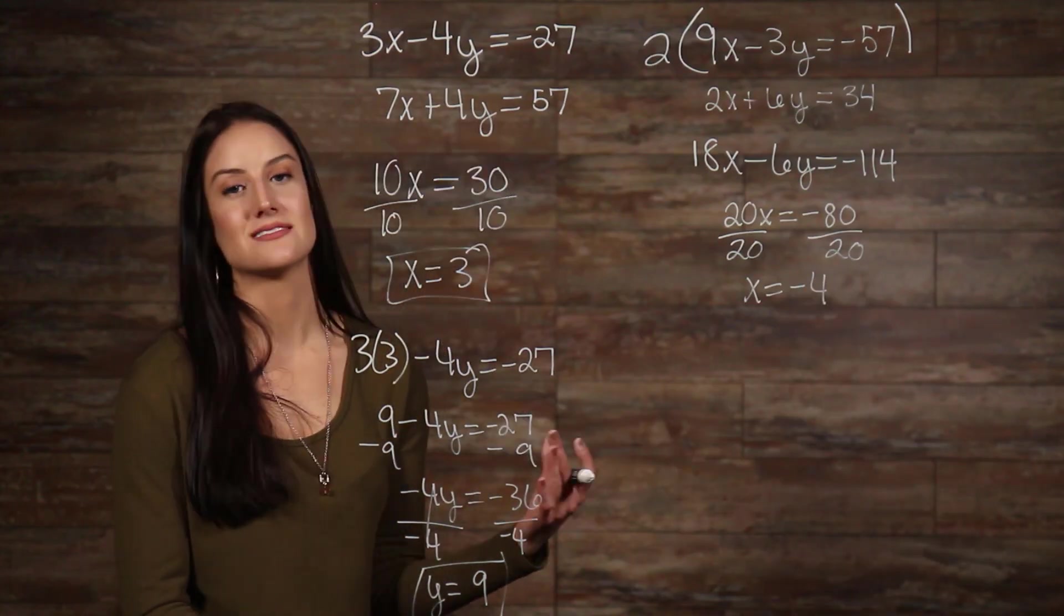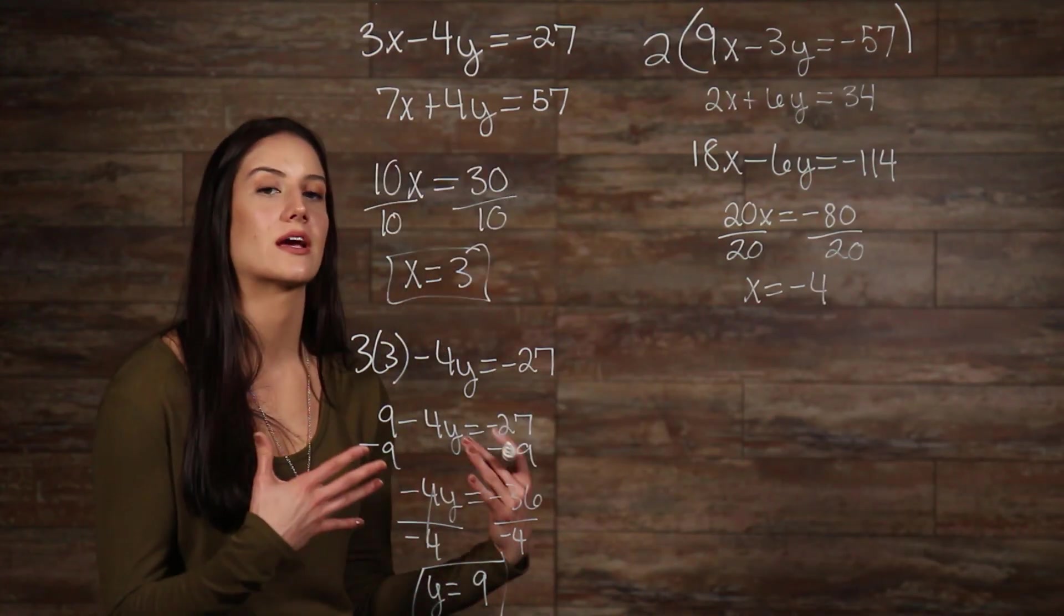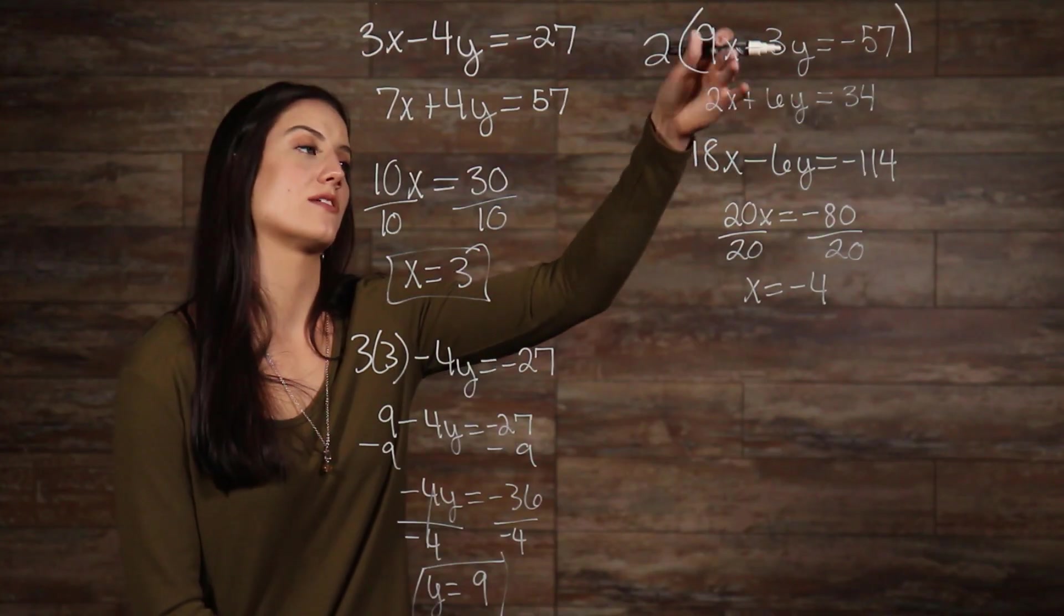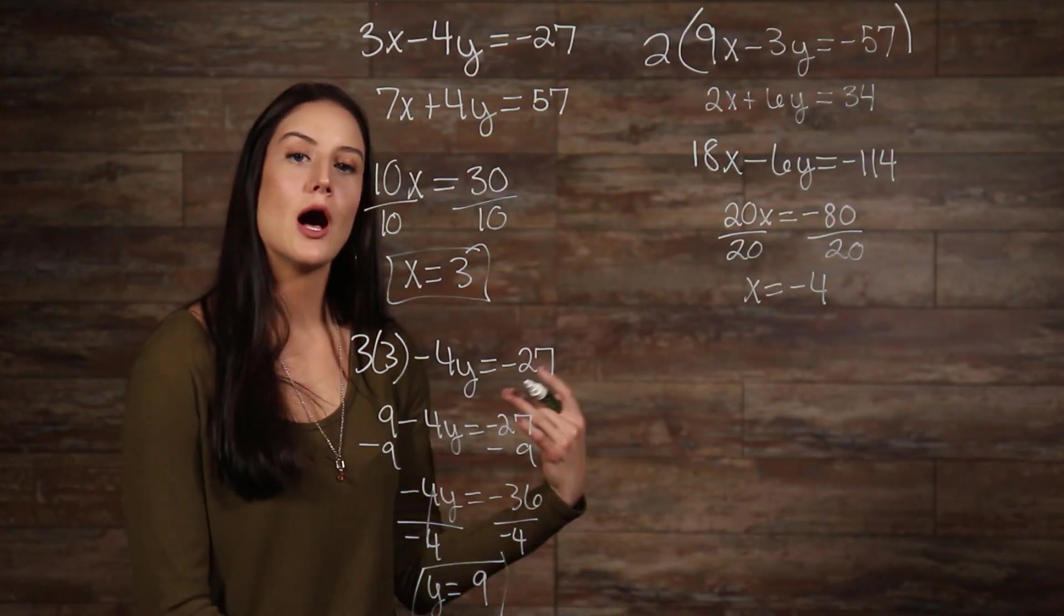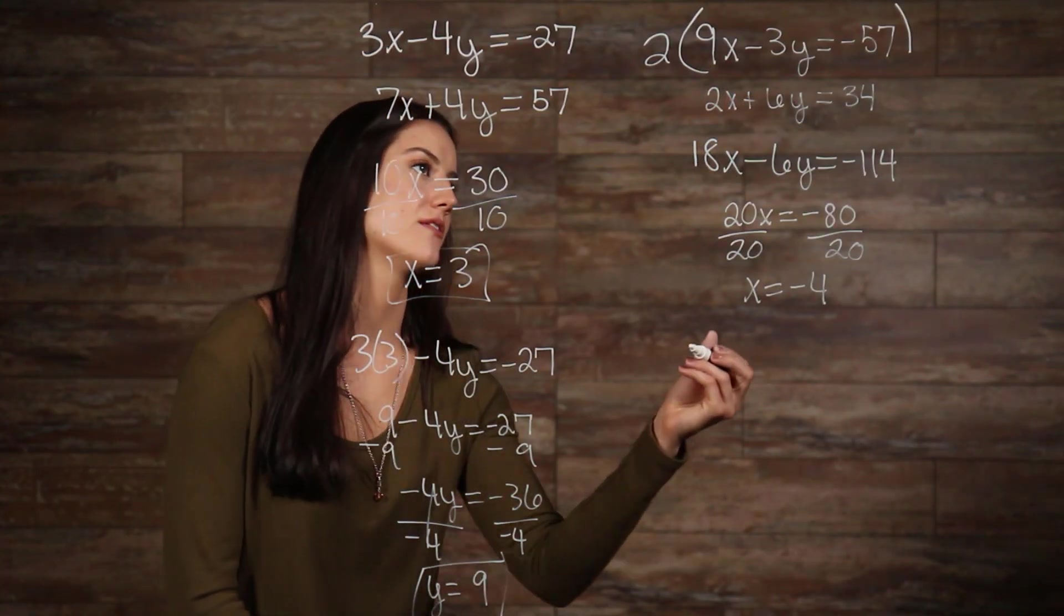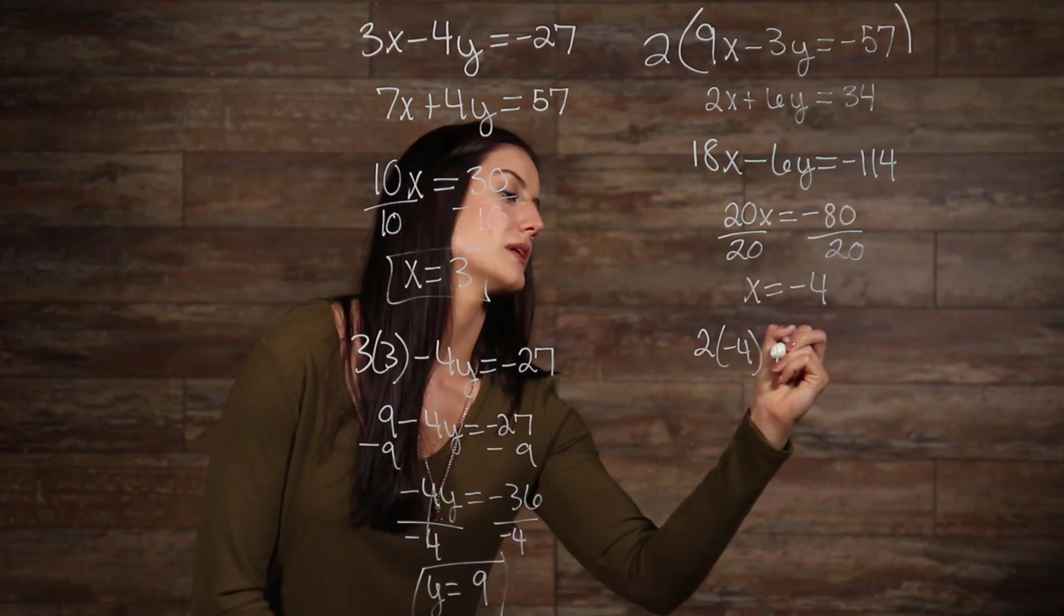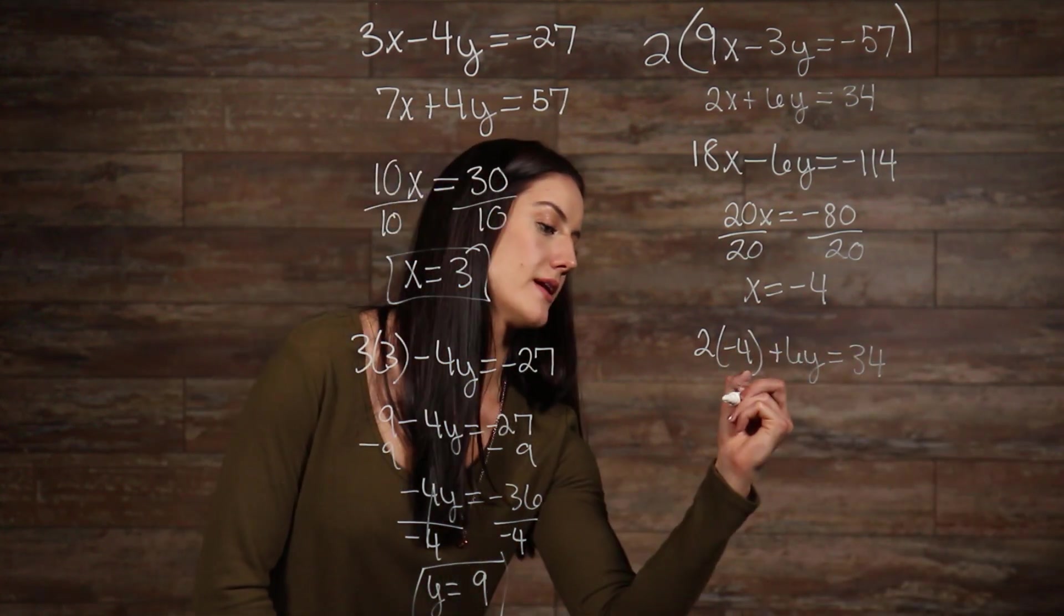So now that we know that x is equal to negative 4, we can plug in our negative 4 where our x's are in either one of our original equations. I'll plug it into the second one. So, we have and I'll simplify this and rewrite it.